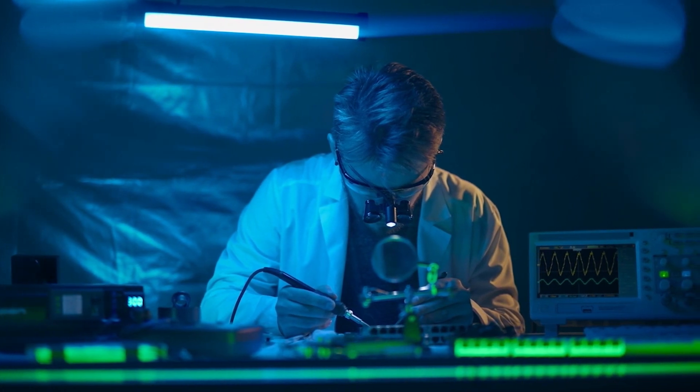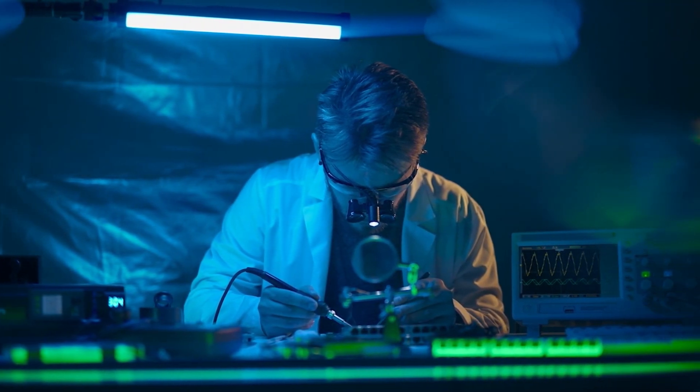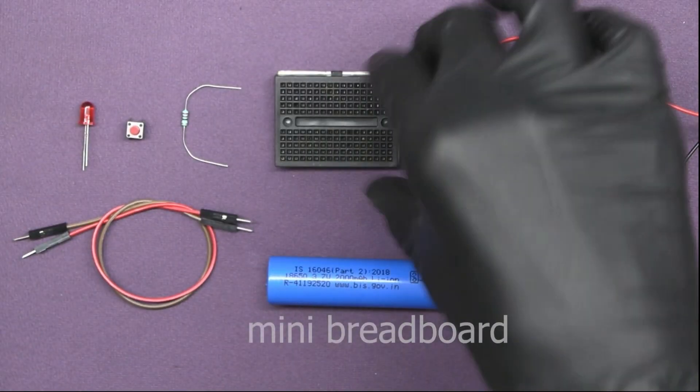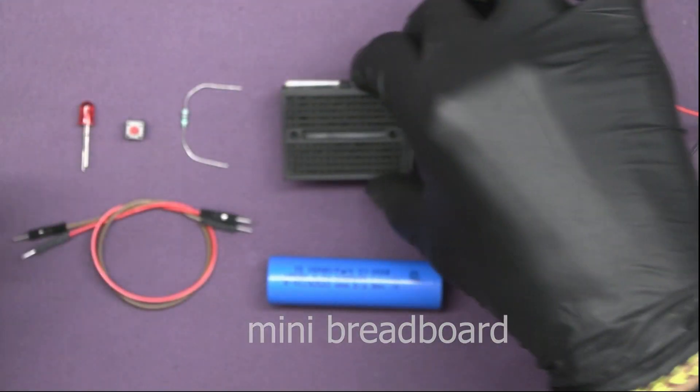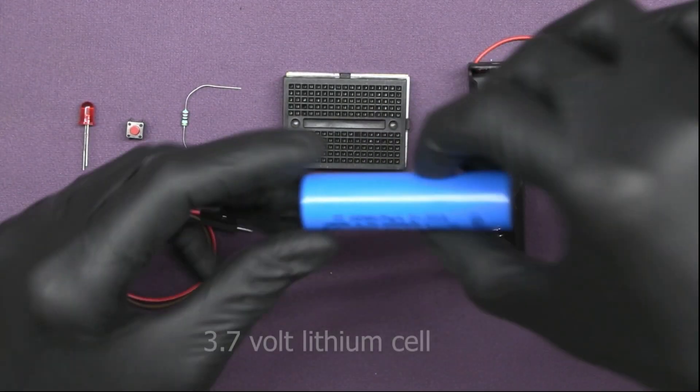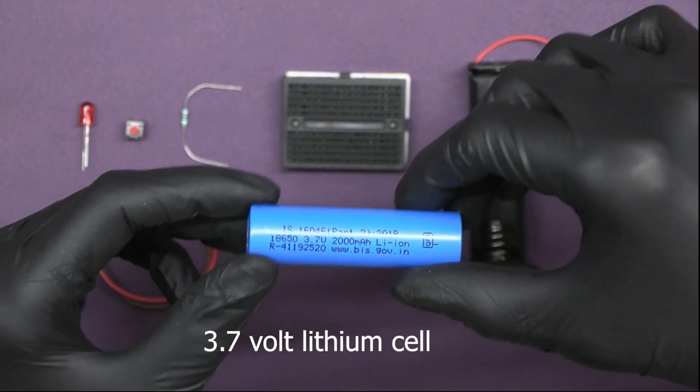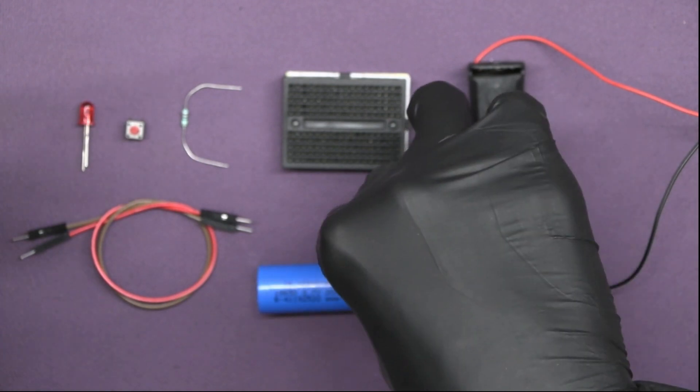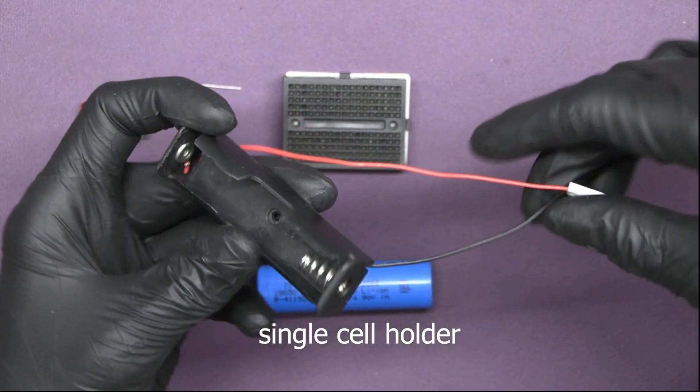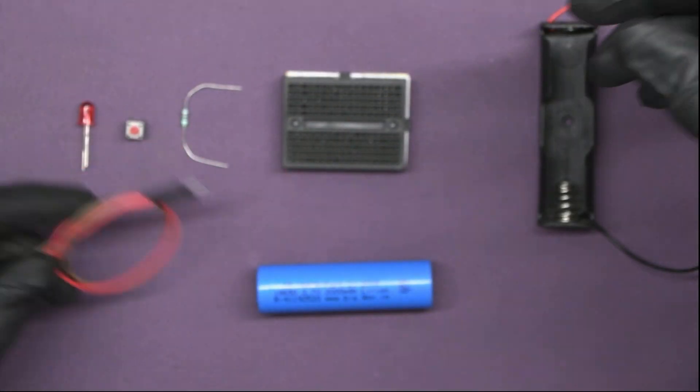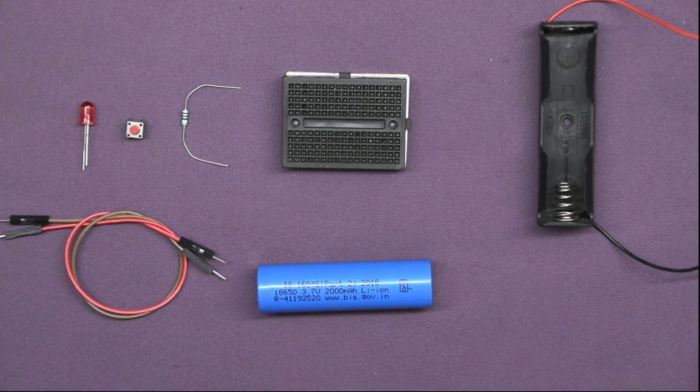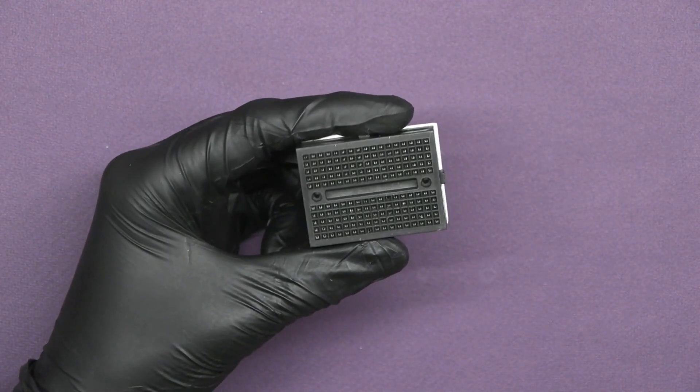A mini breadboard for building temporary circuit, one lithium cell 3.7 volt, battery holder for lithium cell, and some jumper wires. Take the breadboard and insert the LED pins into it.